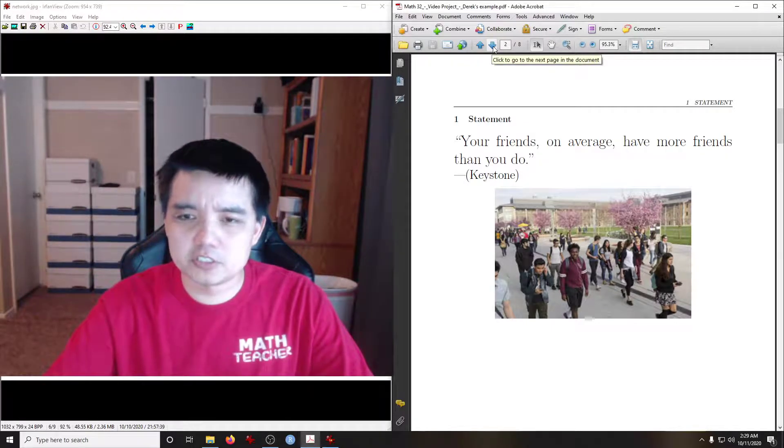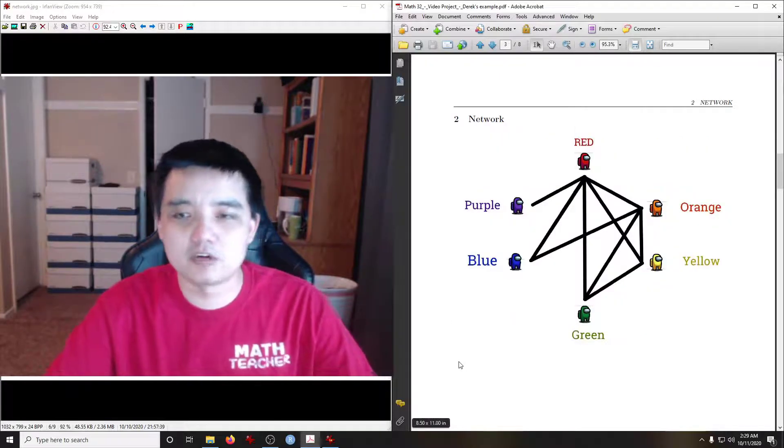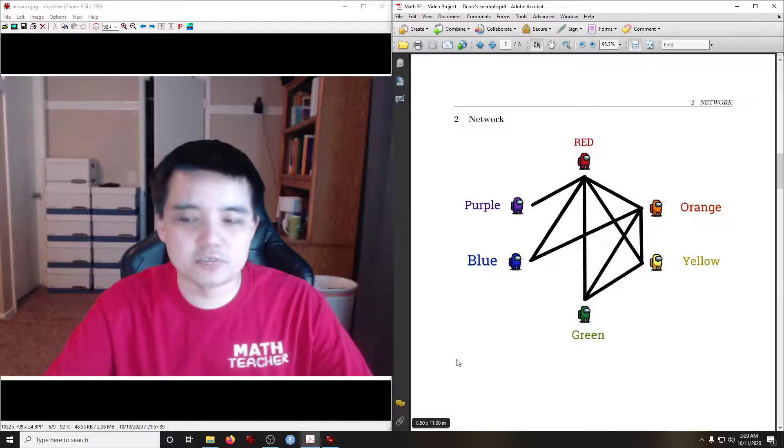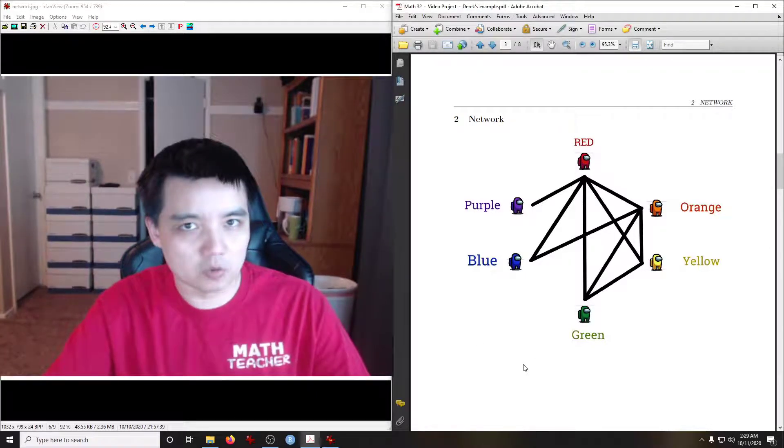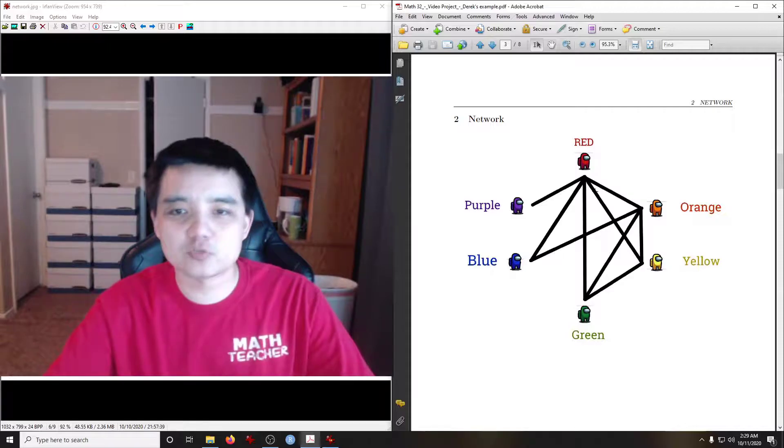In order to eventually get to calculations, let's have an example to play with. Here I have six characters from the Among Us video game. And we have a network between them, a friendship network if you will, where there's a drawn connection if they, in this hypothetical, are friends with each other.